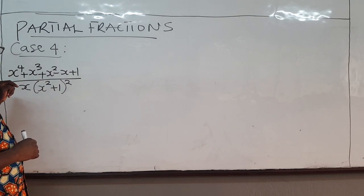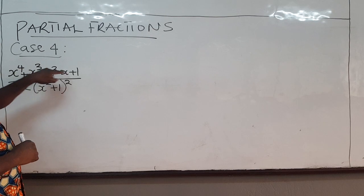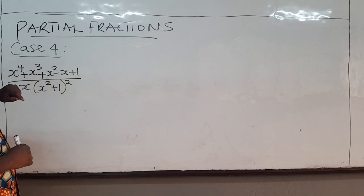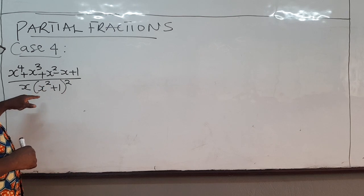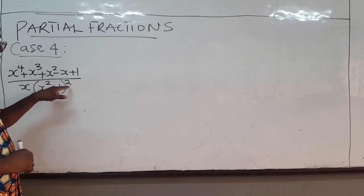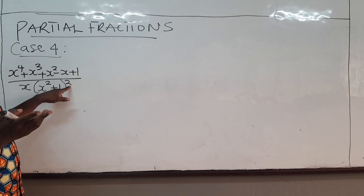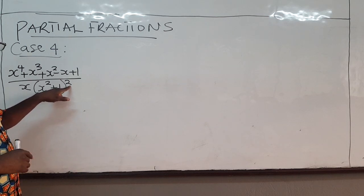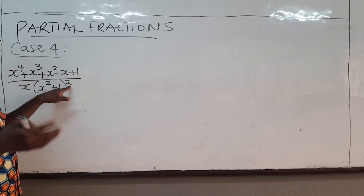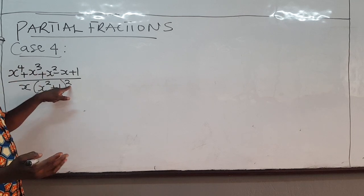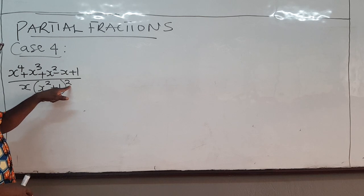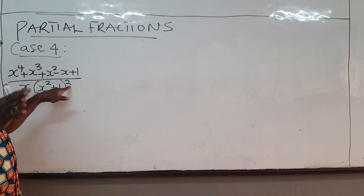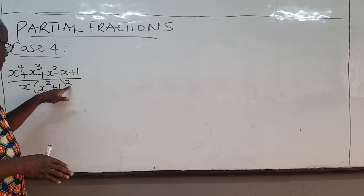In Case 4, you have a polynomial in the numerator, and the denominator has a quadratic which is irreducible and it is repeated — in this case, it is squared. We are going to use the same approach we used for Case 2 with linear repeated factors; a similar approach is applied here.